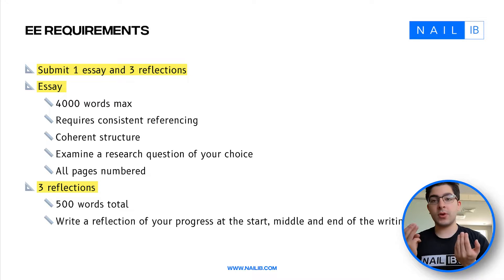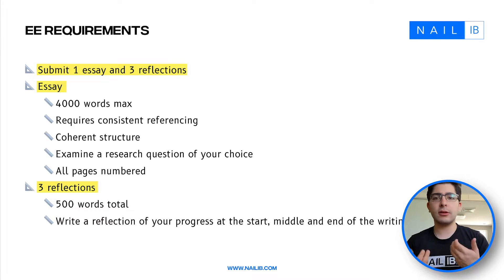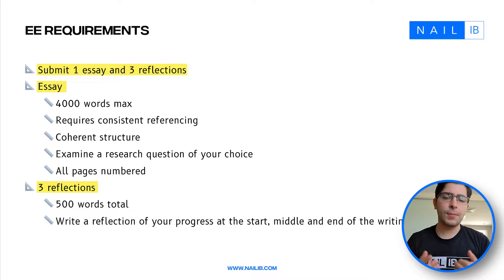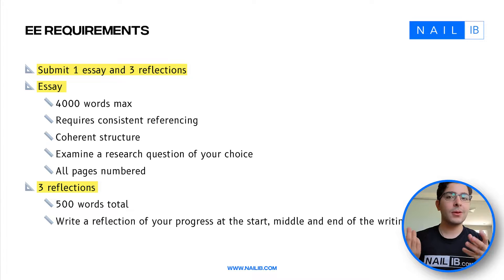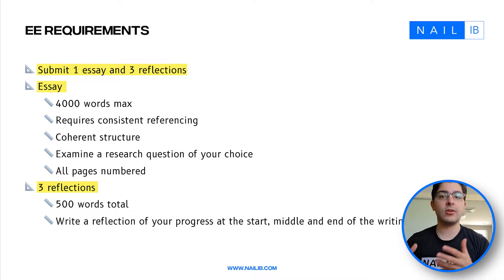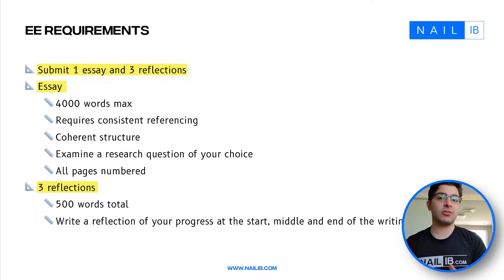There are three reflections. The first should be roughly at the start, when you've developed a preliminary question and begun approaching it. The second should be around the middle, after you've written a decent chunk of the essay. The third is written after you finish and submit, where you reflect on your progress, what you think of the final product, and how you feel you've grown as an individual. I'll cover more details about the reflections in a later video.